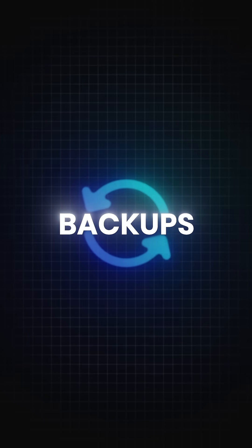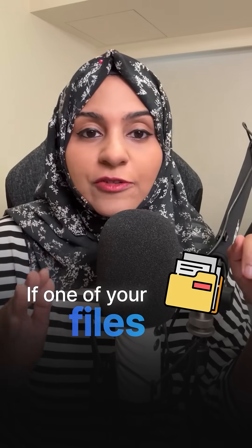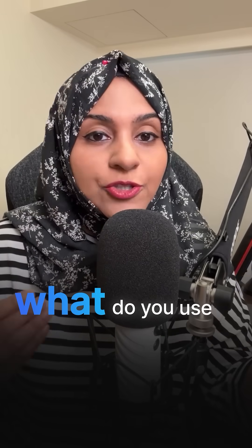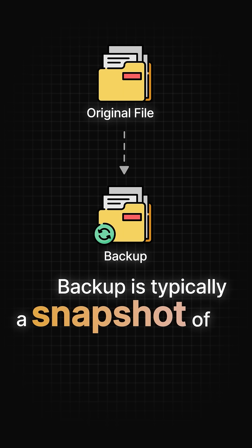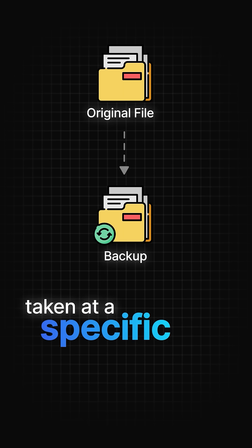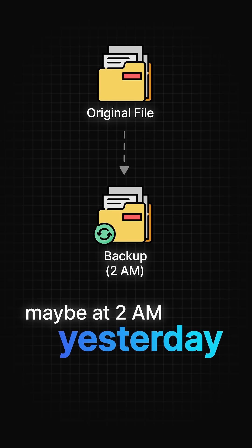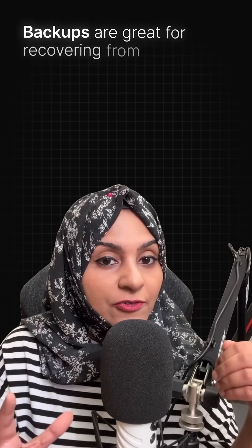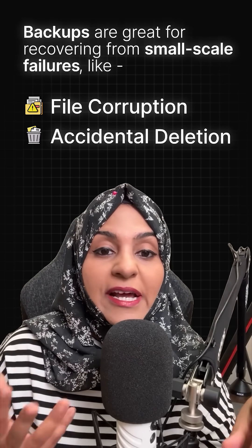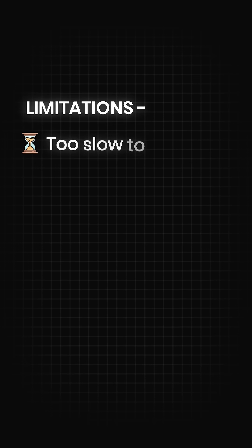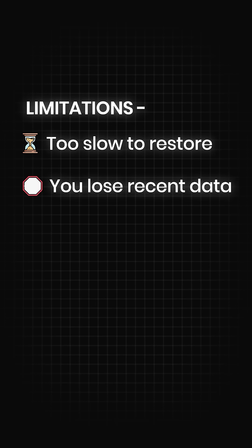First, let's talk about backups. If one of your files gets corrupted, what do you use to restore it? Backup. A backup is typically a snapshot of your data taken at a specific point in time, maybe 2 a.m. yesterday. Backups are great for recovering from small-scale failures like file corruption or accidental deletion. But here's the catch — backups are slow to restore. They are snapshots.